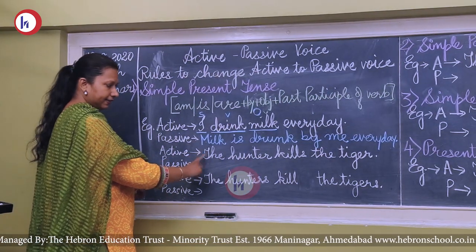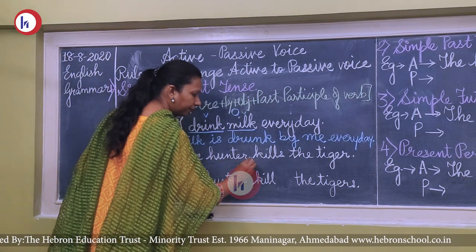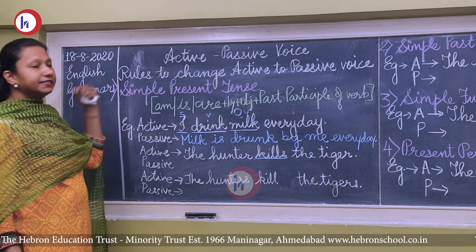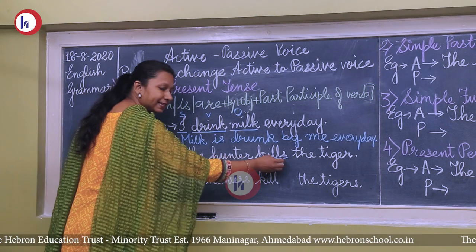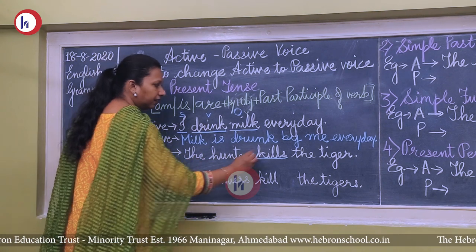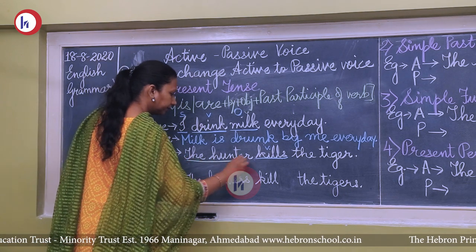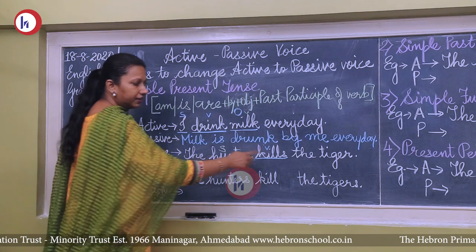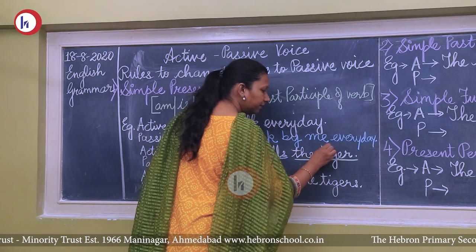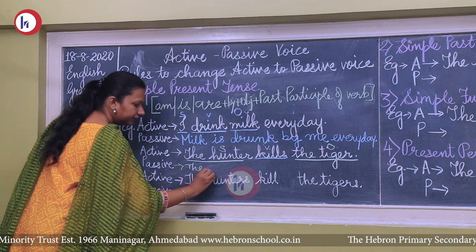Another example: 'The hunter kills the tiger.' The verb 'kills' has an 's', indicating simple present tense with a singular subject. Ask: 'The hunter kills what?' — answer is 'the tiger', so tiger is the object. The passive voice starts with 'the tiger'. The subject 'the tiger' is singular, so we use 'is'. Kill changes to its past participle 'killed'.